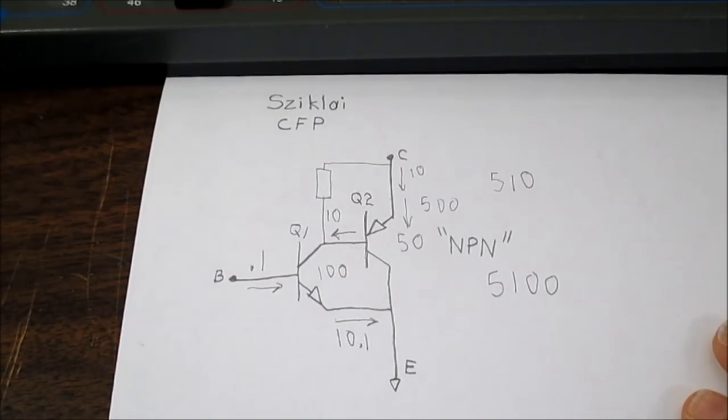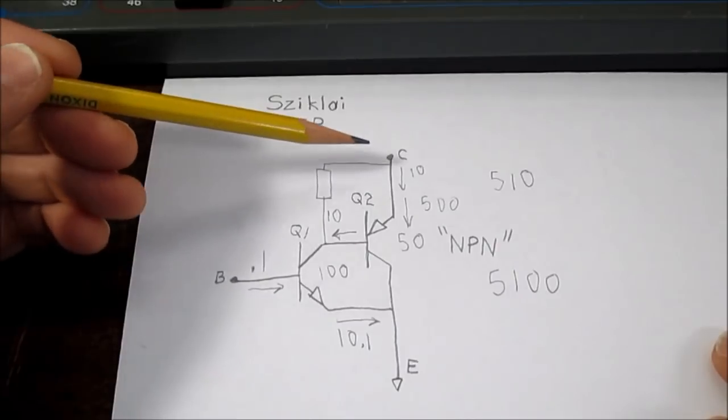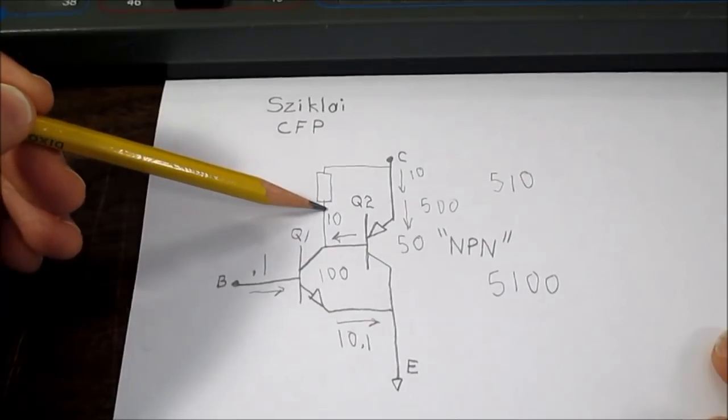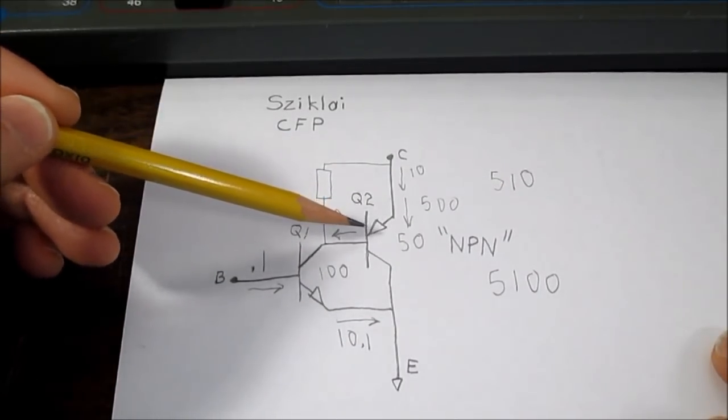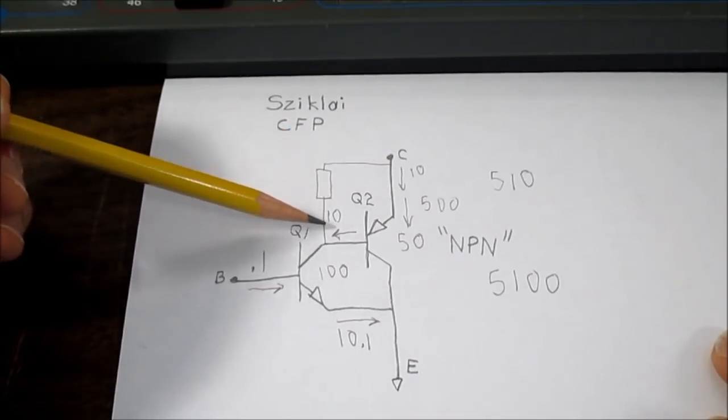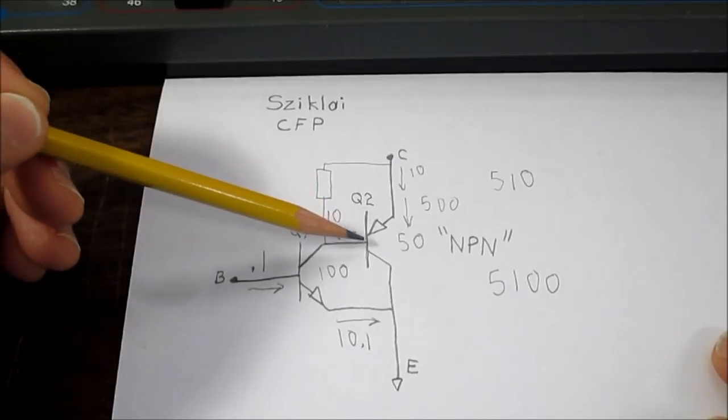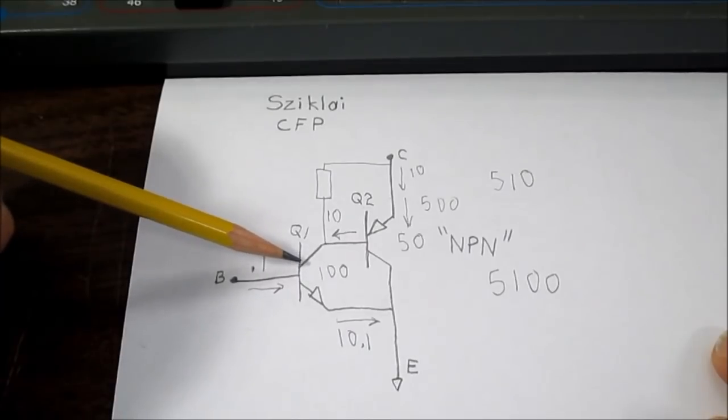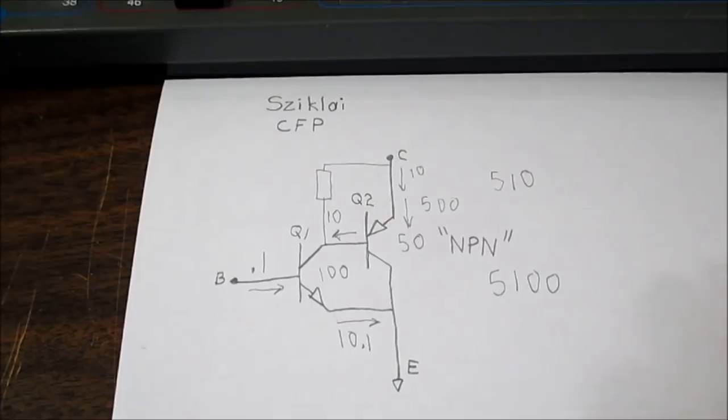And again, you see a lot of parallels to the Darlington circuit here. Another similarity is that this transistor will not turn on until the voltage drop across this resistor reaches 0.65. So we have to have enough current going through here to get that voltage drop high enough before this transistor turns on. In other words, this transistor will be doing all of the work at low currents. Let's check that out.